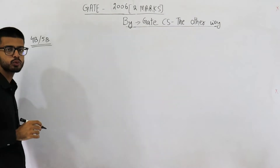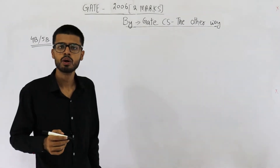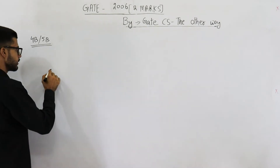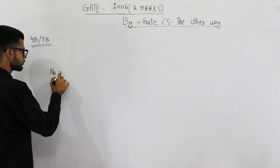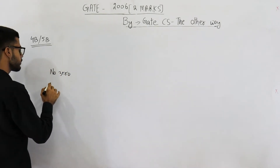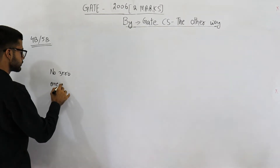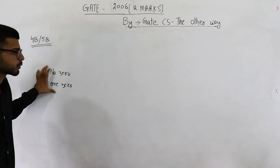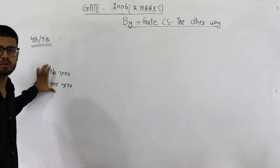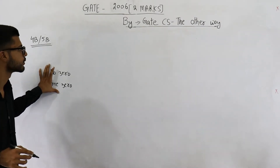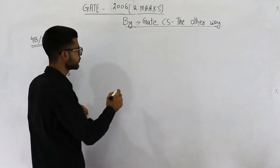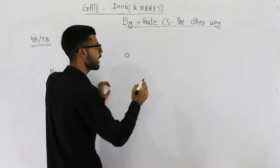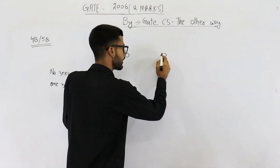They are saying at most one leading and at most one trailing zero is allowed. At most one means no zero or one zero. So only these two possibilities are allowed in trailing zeros as well as leading zeros. You can have at most one zero at the beginning and at most one zero at the ending.